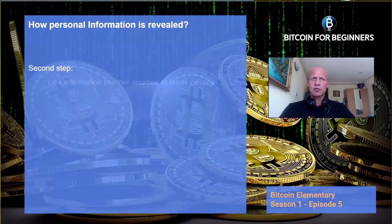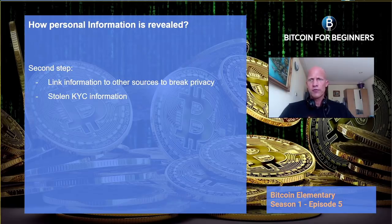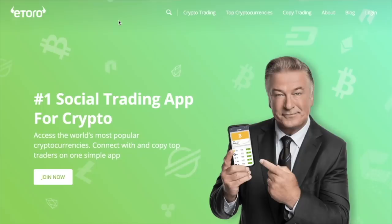The second step is to try to link that information to other sources to break the privacy of the user, such as stolen KYC information which users often need to provide to exchanges or online wallet providers. The third step is to launch phishing attacks to extract passwords or private keys from the user, or make extortion attempts.